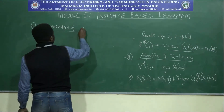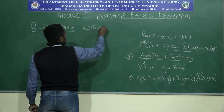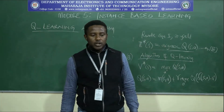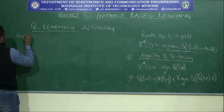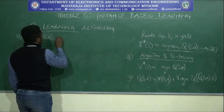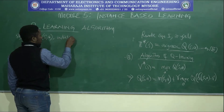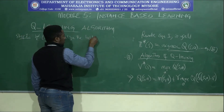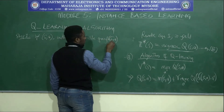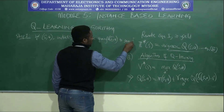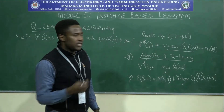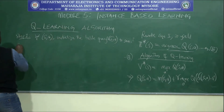The Q-learning algorithm will be summarized in a series of four steps. Step one says: for each state-action transition, we initialize the table query — Q of state-action — to zero. Once we initialize this, we then observe the current state and perform the following actions.